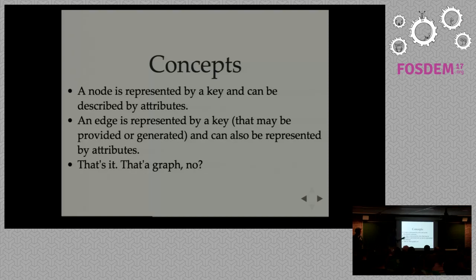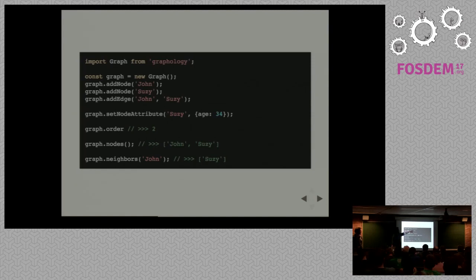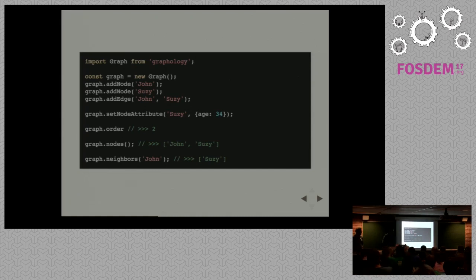The main concepts are simple: you have nodes represented by keys, and those nodes may be described by attributes as key-value pairs. An edge is represented by a key — which may be provided or auto-generated by the graph — and can also have attributes. So nodes have key and attributes; edges have key, source, target, and attributes. Here's a code example: you load the reference implementation, build a graph, add nodes, add an edge, add an attribute to a node, check the graph order, iterate on nodes, iterate on a node's neighbors. It's basically just a graph API.